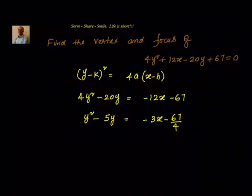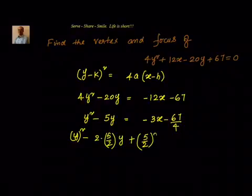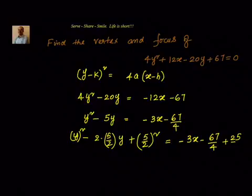Now we have the a² and 2ab terms here. We don't have the b² term, so we want to complete the square. We have the a² term and the 2ab term. To write it in (y - k)² format, I can see that y² - 2·(5/2)·y, so to complete the square I have to add (5/2)² on both sides.